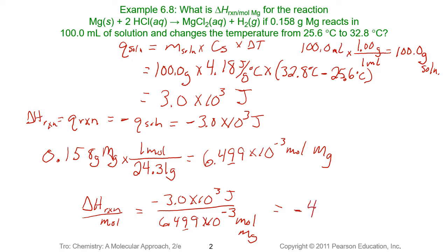We get a number that is more meaningful to compare or use in a future experiment: −4.6 × 10⁵ joules per mole of magnesium for this chemical reaction. Joules are pretty small, so we do usually end up with pretty large numbers.